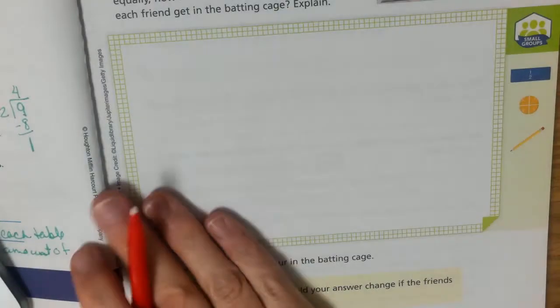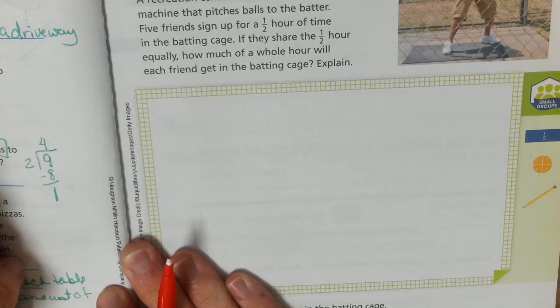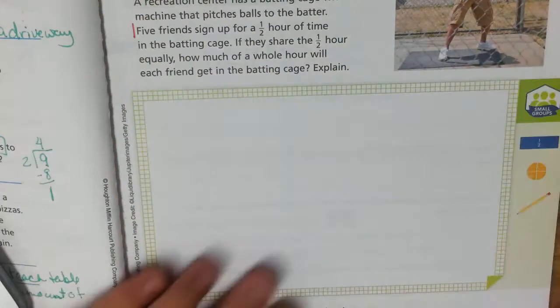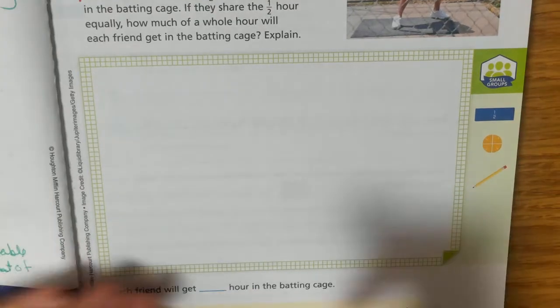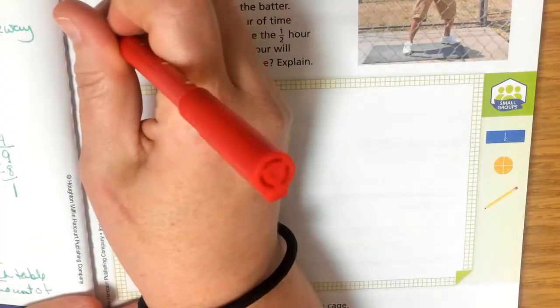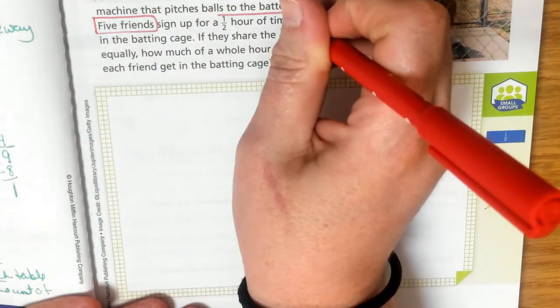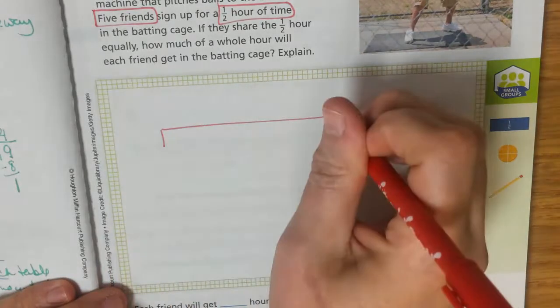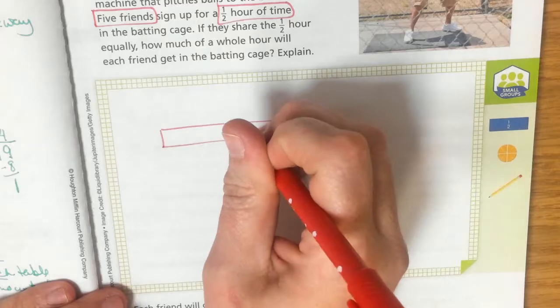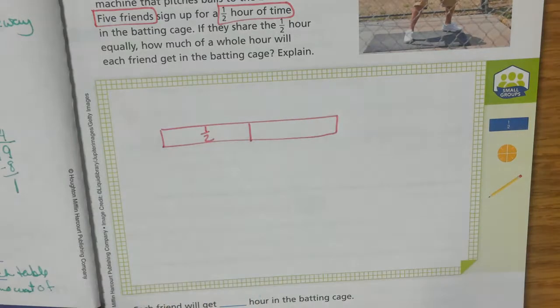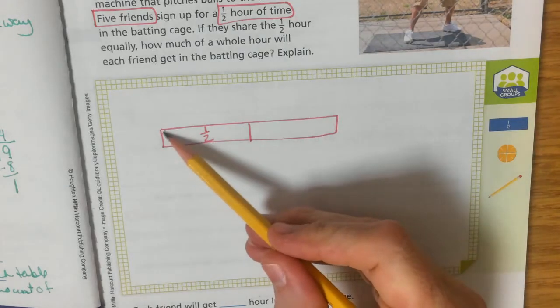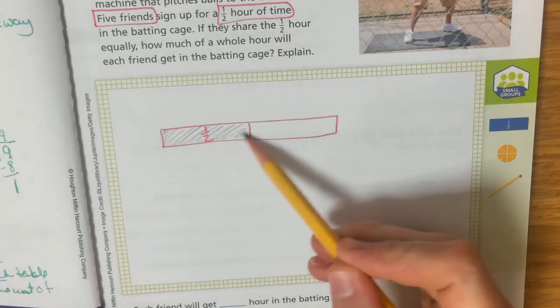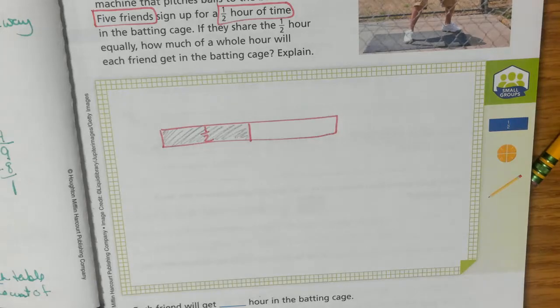We have five friends and they are signing up for half an hour of time. So we know that here's our whole, right? This would be a whole hour. This is the time that they signed up for. They signed up for a half an hour of time. So I'm going to shade that in. Now each one of the friends is going to share this half hour of time and there are five of them.